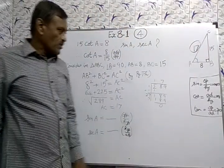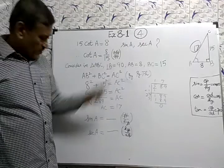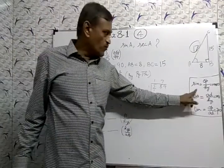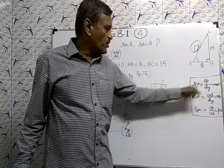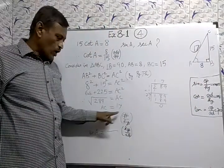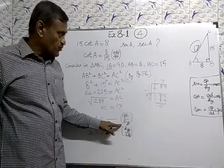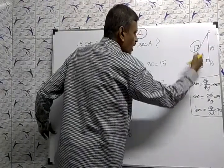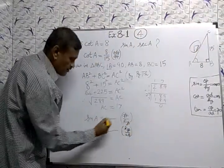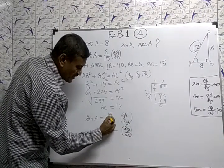Now what do we want? Sin A. Sin A equals formula opposite by hypotenuse. So sin A equals opposite by hypotenuse. What is opposite to A? 15. Hypotenuse 17. So sin A equals 15 by 17.